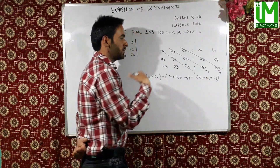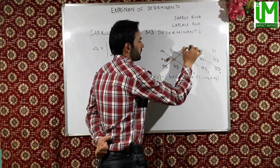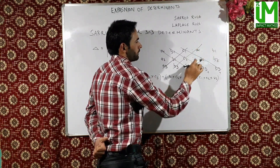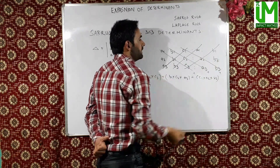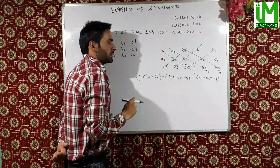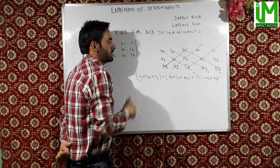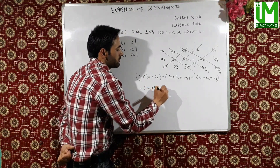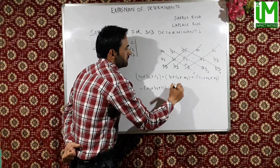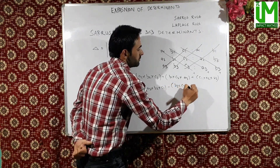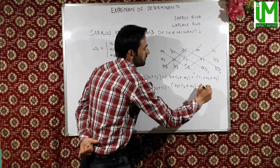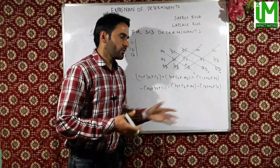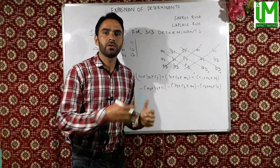Now we draw three more lines in the other direction. The elements along these lines are also taken as products, but this time with a negative sign. So we write minus A3·B2·C1, minus B3·C2·A1, minus C3·A2·B1. The determinant is the sum and difference of all these products.